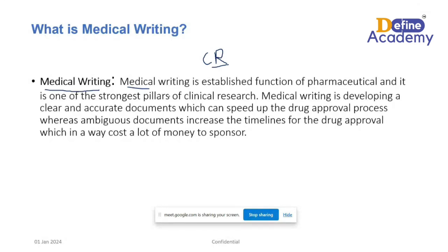The medical writing team does that. Medical writing is an established function in pharma and one of the strongest pillars of clinical research. Medical writing is about developing clear, accurate documents which can speed up the drug discovery process. A regulatory body is not coming to your site daily to observe your clinical research — you submit documents like the protocol, investigator's brochure, and informed consent form. They review these, so the documents must be clear and accurate to speed up drug discovery.